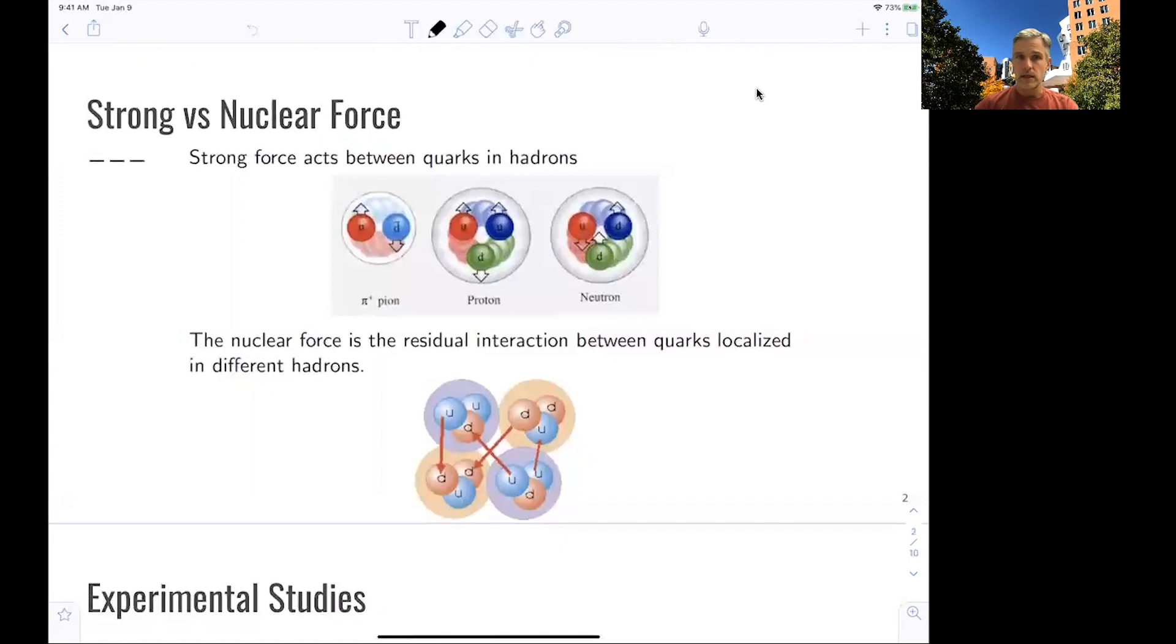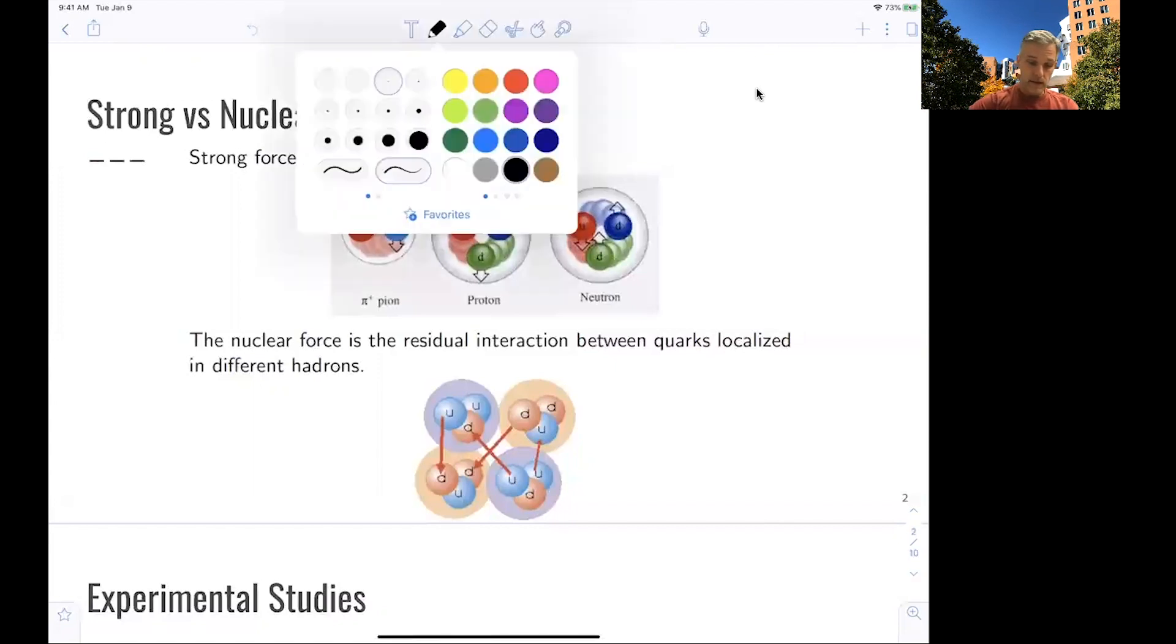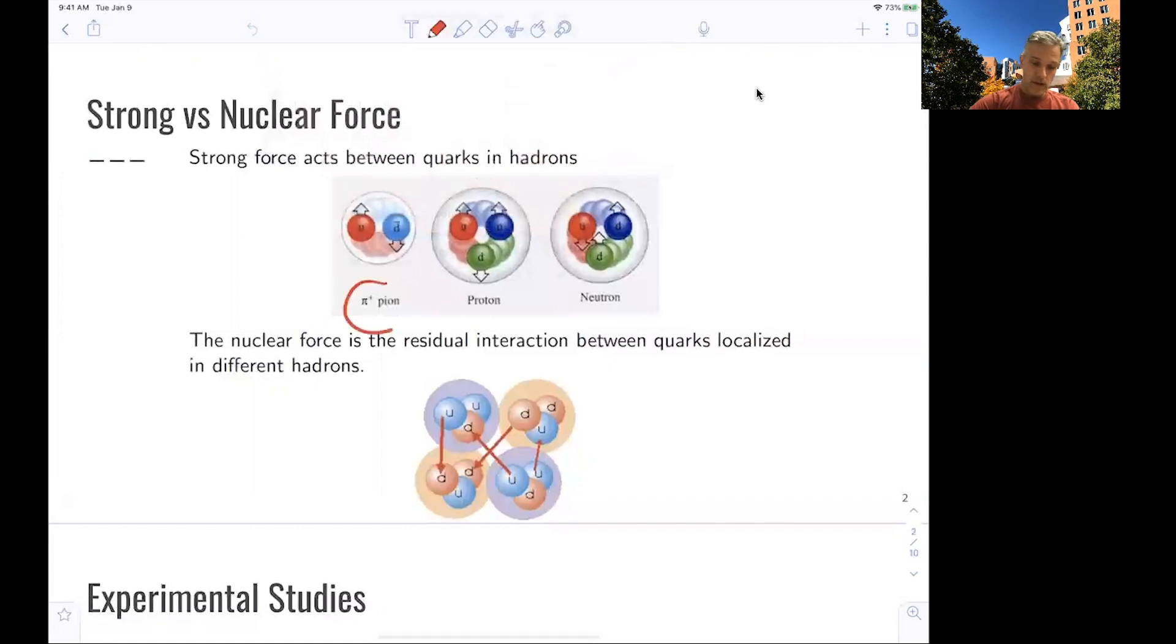What is this? We have seen that the strong force acts between quarks and hadrons. For example, we have discussed at length the pion, which is made up of an up quark and a down quark. And those are held together or bound together via the strong force. And we looked also at the structure of a proton and the structure of a neutron.